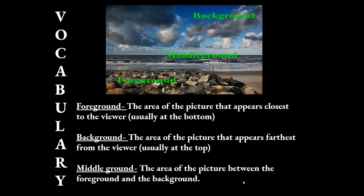First, let's start with vocabulary. Anyone looking at a picture, photograph, or work of art is called the viewer. The part of the picture that appears closest to the viewer, usually at the bottom, is called the foreground. The part of the picture that appears farthest from the viewer, usually at the top, is called the background. And the area between the foreground and the background is called the middle ground.